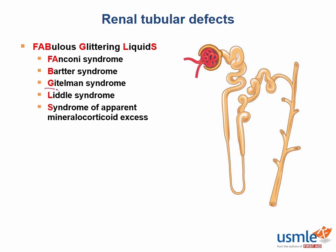Gittelmann syndrome is a reabsorption defect in the distal tubule, due to an autosomal recessive mutation in the sodium chloride transporter. A deficiency of this cotransporter would be similar to use of thiazides. Also remember it will be less severe than Bartter syndrome, because the majority of sodium is reabsorbed in earlier parts of the nephron.